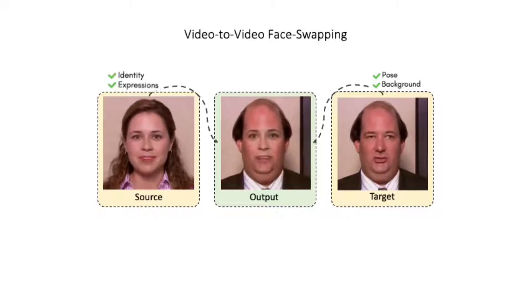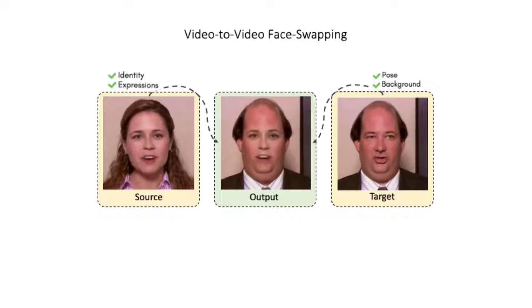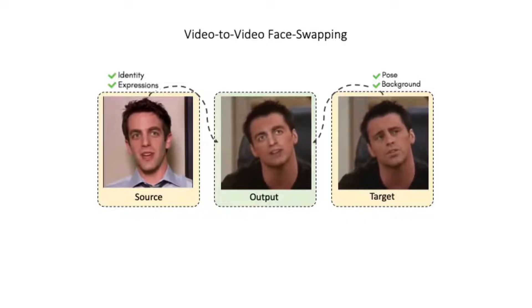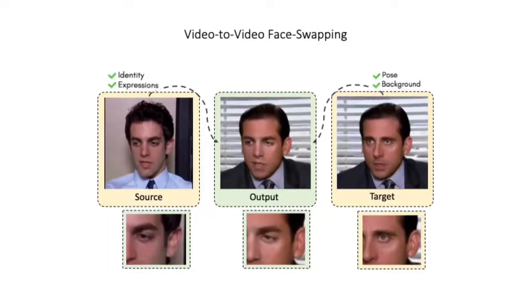Now we look at some outputs. Please note that all the face-swapped outputs we will see are on identities unseen at the time of training. In this example, we swap faces with drastic differences in facial structure and expressions. In another example, the source and target have very different facial structures and head motions. Even though the head poses have changed, Faceoff is able to generate a coherent identity and pose in the output. Faceoff also changes the light intensity of the foreground to match the background.